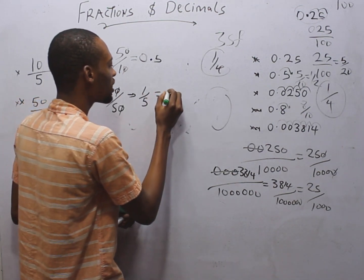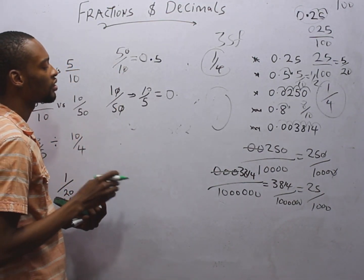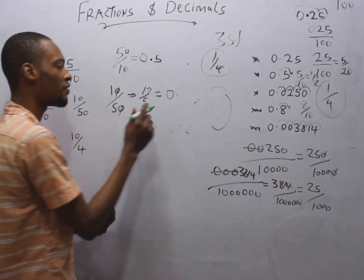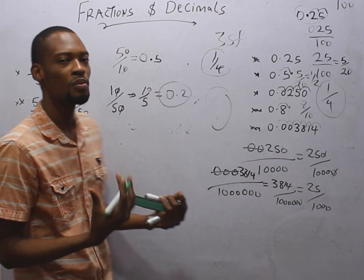The numerator is bigger than the denominator. So given this, we already have 0 point. There is imaginary 0 here. Then, 10 divided by 5, this equals 2.